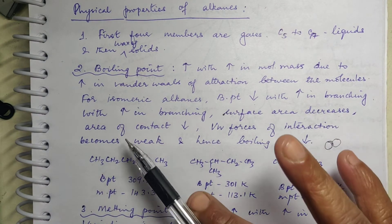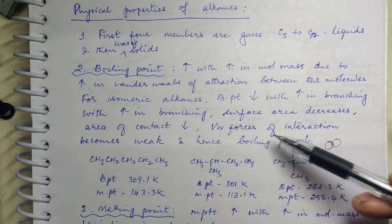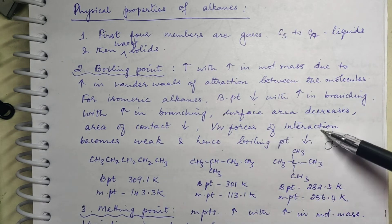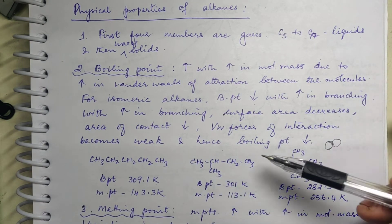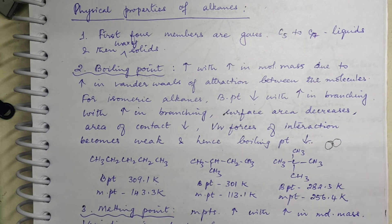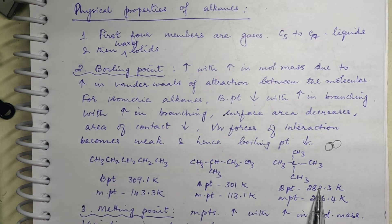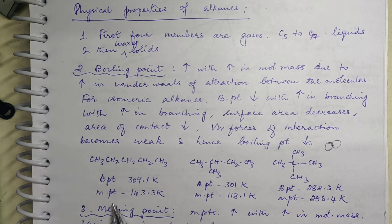Boiling point decreases with increase in branching because surface area decreases, so area of contact decreases, van der Waals' force of interaction also becomes weak, and hence the boiling point decreases — 309, 301, 282 — it is decreasing.